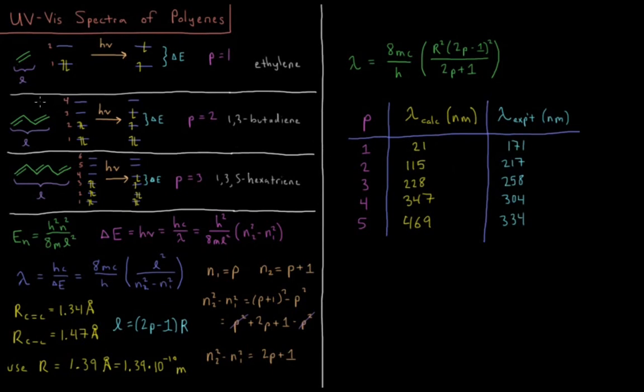Notice the trend here. As we're going along, we're going up between higher energy levels, but also our box is getting longer. So the difference between our energy levels is getting bigger, but the L-squared, the increased length of our box, is winning. So it's actually, as we go up in P, the lambda, the wavelength, is getting larger, and that means we're having a lower energy transition, primarily because the box getting bigger is winning over the energy levels getting further apart.